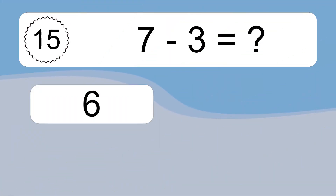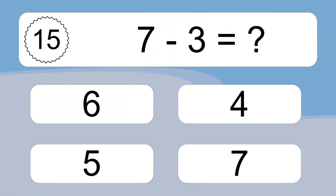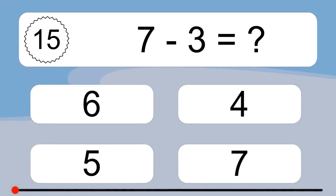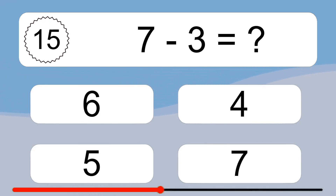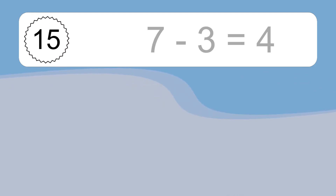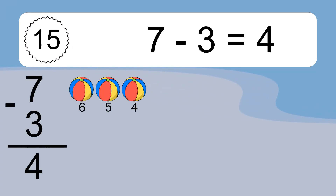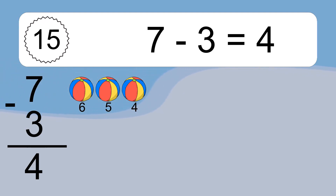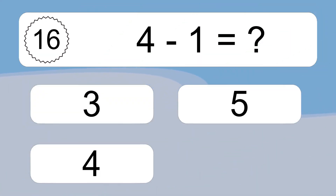7 minus 3 equals what? 7 minus 3 equals 4. Let's count it: 6, 5, 4.